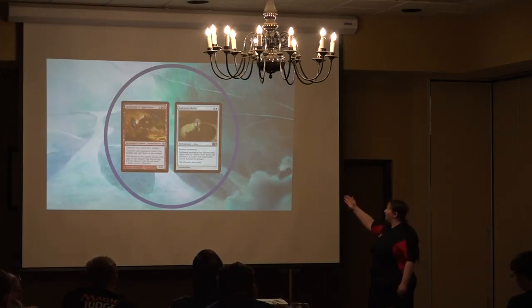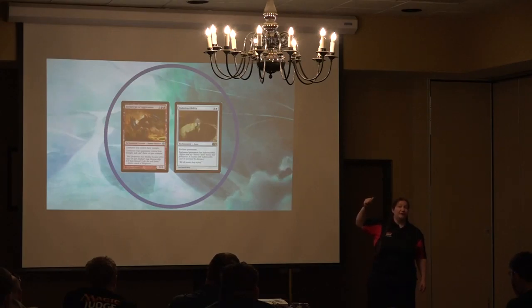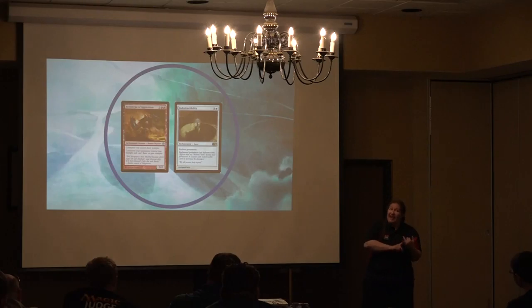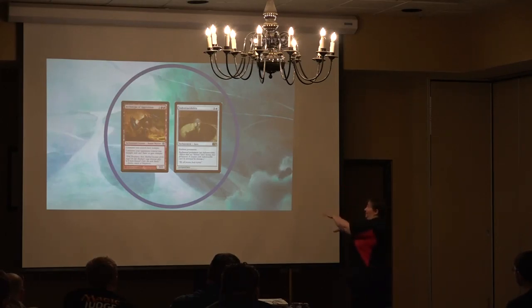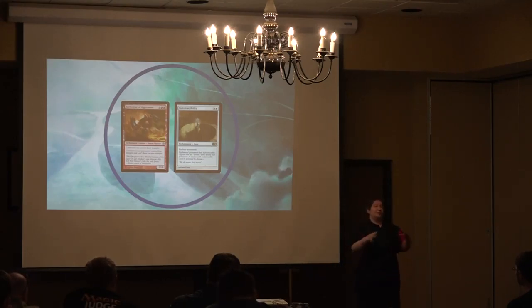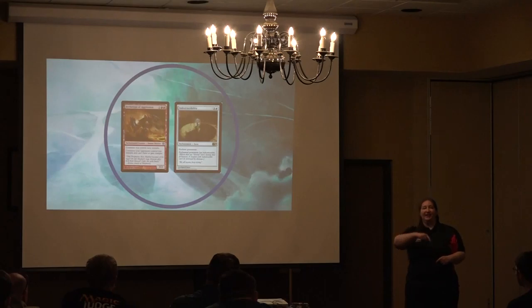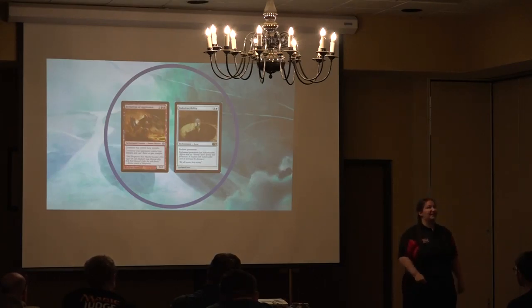Next: ability. We have a lot of things that apply in the ability layer. Pretty much anything printed in the text box is probably an ability. For example, 'creatures you control have trample' — that's an ability. 'Creatures your opponents control lose trample and can't have or gain trample' — ability granting, ability losing. 'Enchanted permanent has indestructible' — indestructible is an ability.